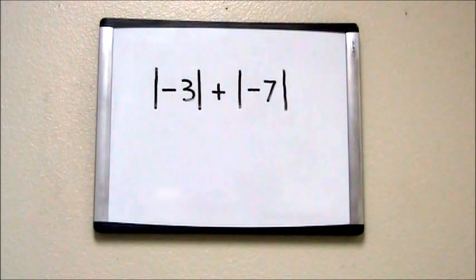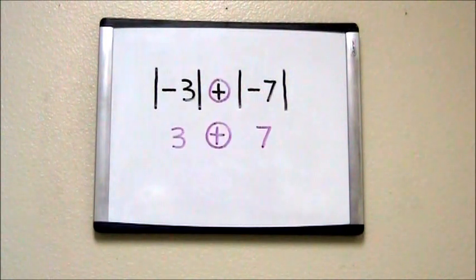So the first thing we're going to do is change the numbers into the correct values. The absolute value of negative 3 is 3. The absolute value of negative 7 is 7.